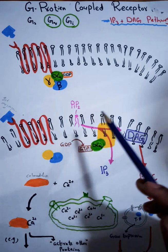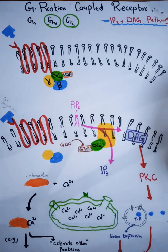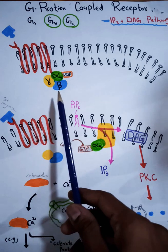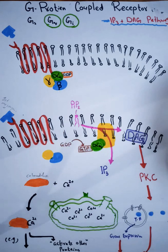In the previous video I explained that G protein is of three types: GS protein, GQ protein, and GI protein. All these proteins will show different responses. So it's not only the ligand that determines which kind of response will be produced — the G protein also determines that, and different G proteins will produce different responses.